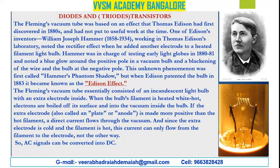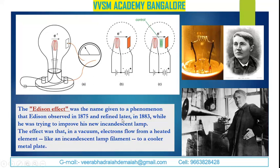Since the extra electrode is cold and the filament is hot, current can only flow from the filament to the electrode, not the other way. So AC signals can be converted into DC signals. The Edison effect is the name given to the phenomenon Edison observed in 1875 and refined in 1883 while trying to improve his incandescent lamp: in a vacuum, electrons flow from a heated filament to a cooler metal plate. This is the circuit diagram illustrating the Edison effect and Thomas Alva Edison in his laboratory.